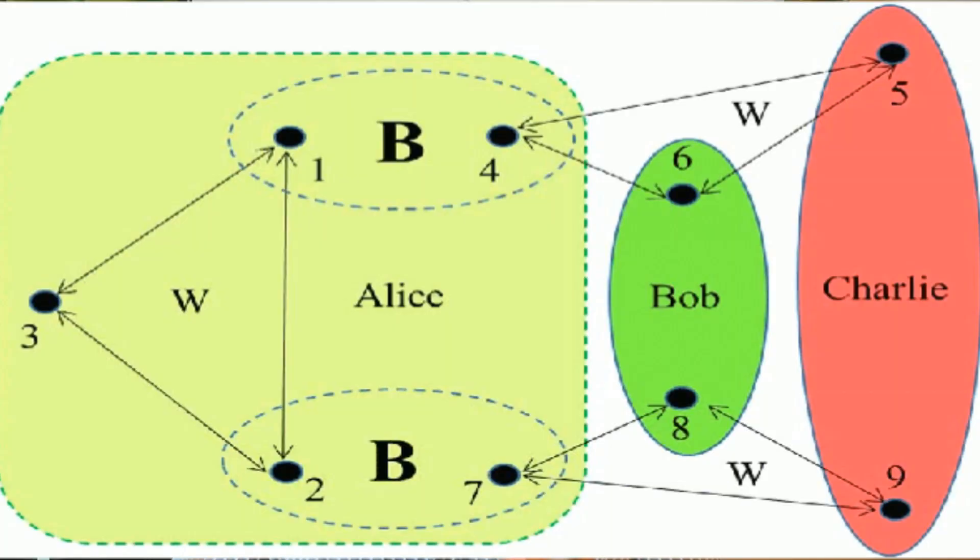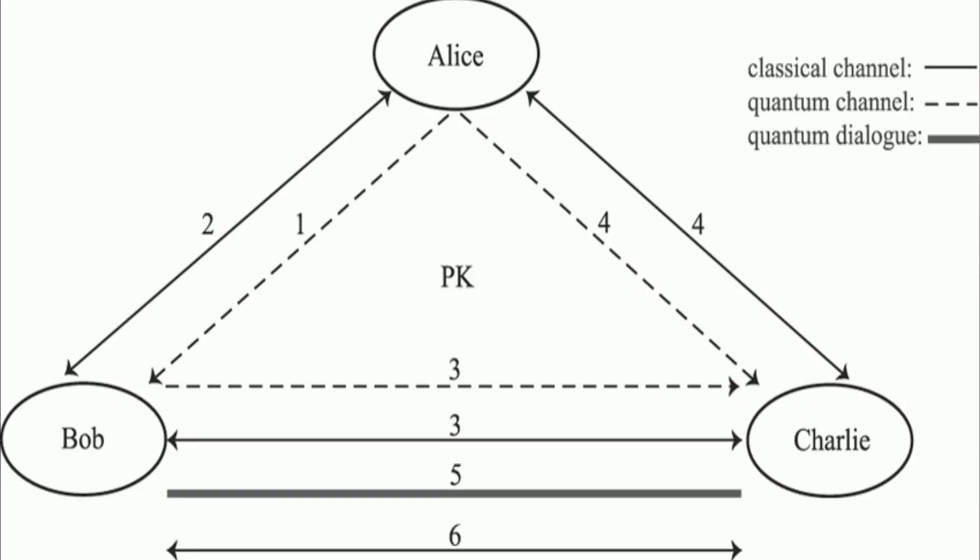researchers entangled quantum systems named Alice, Bob, and Charlie by sending particles of light between them. Because in this system, quantum states have been switched to different nodes with data teleported.